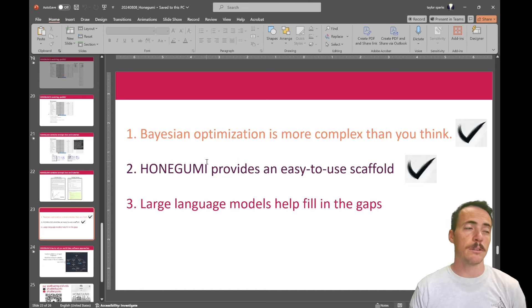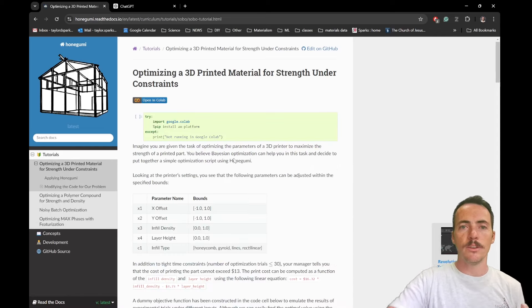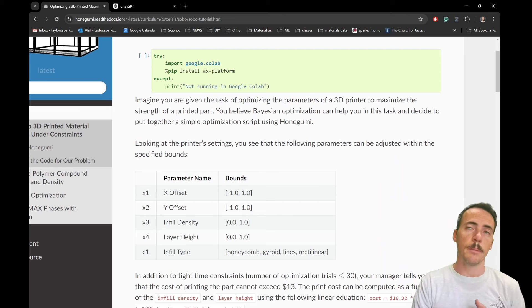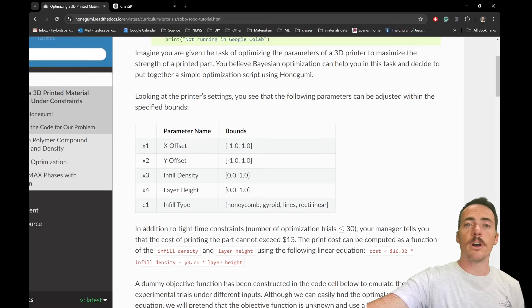Okay. Briefly now, let me talk about how large language models can be used to fill in the gaps. And to do that, I'll show you one of the tutorials right now. Okay. So let's say that you're trying to optimize a 3D printer and you have some constraints, right? So I don't know if any of you've done 3D printing before, but there's typically a couple of parameters that you can choose to optimize before you ever use the printer, like the X offset, the Y offset, the density of the infill, the layer height. And then there's a category of your infill type. Do you want a honeycomb fill, a gyroid, lines, rectilinear, right? So here we have five dimensions that we're going to explore solutions over, right?